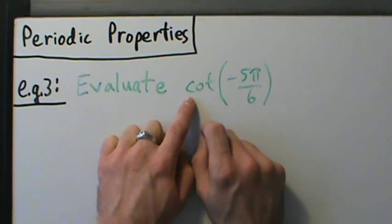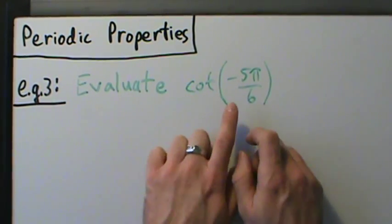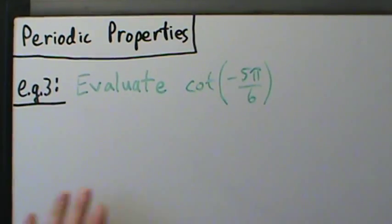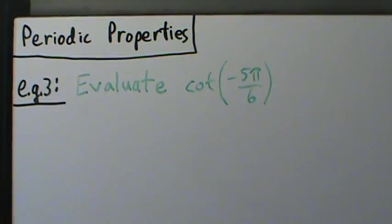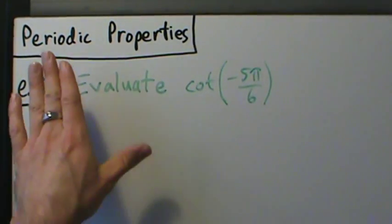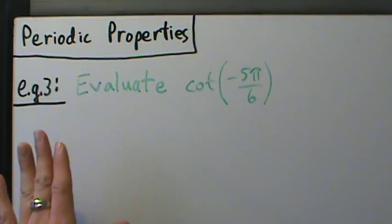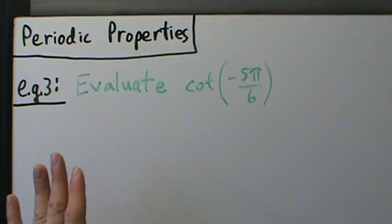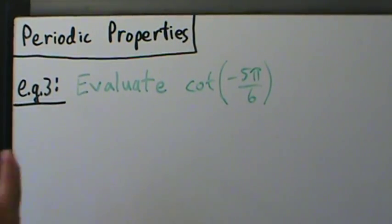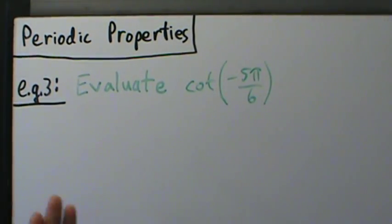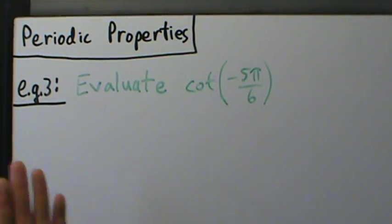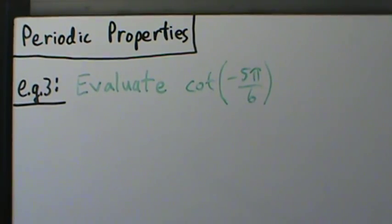What we're going to do is add or subtract π as often as we need to. Yes, 2π will still work, but we really want to use the periodic properties properly and just add or subtract multiples of π as often as we need to.